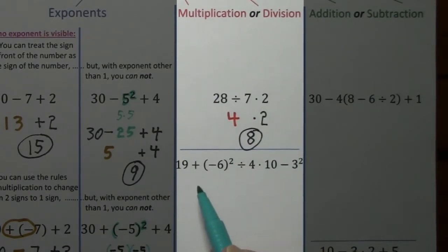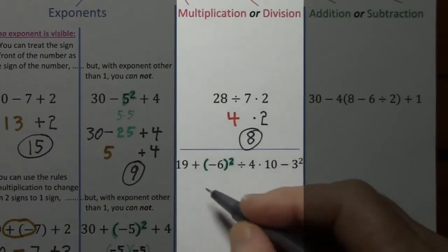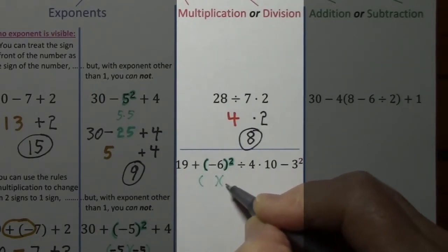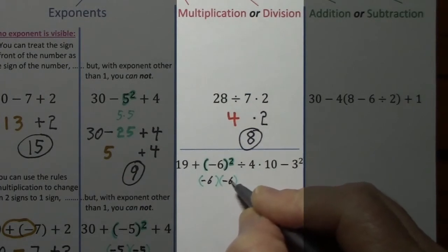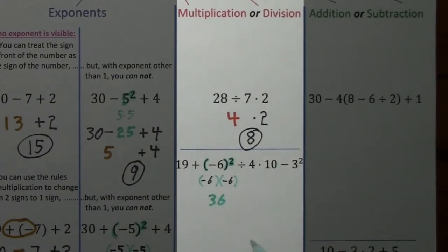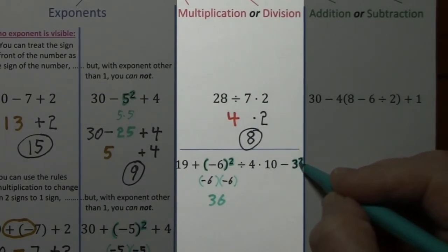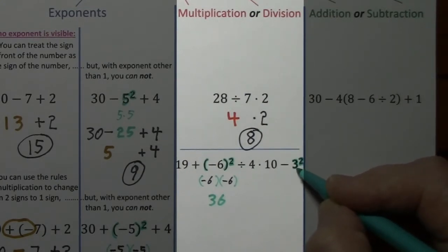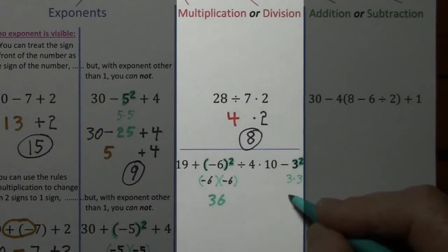Looking at the next example, proceeding left to right, we have exponents. Remember the exponent applies to what it touches, nothing else. We have two sets of parentheses each with negative 6, and negative 6 times negative 6 is positive 36. Since the other exponent is separated by a few operations, I'll take care of it on the same line. The exponent of 2 only applies to the 3, so we have 3 times 3, which is 9.